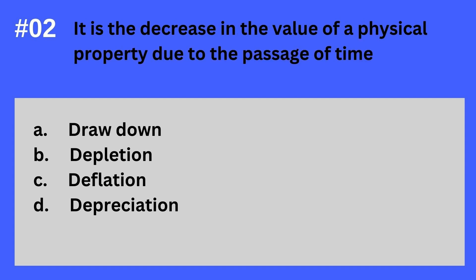Question 2. It is the decrease in the value of a physical property due to the passage of time. A. Drawdown. B. Depletion. C. Deflation. D. Depreciation. The answer? It's D. Depreciation. It is the decrease in the value of a physical property due to the passage of time — Depreciation.